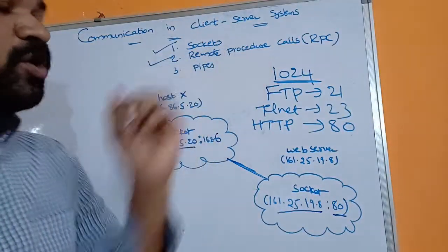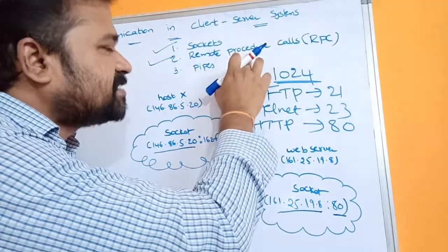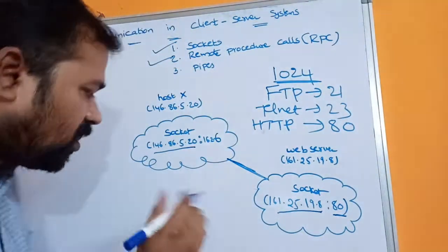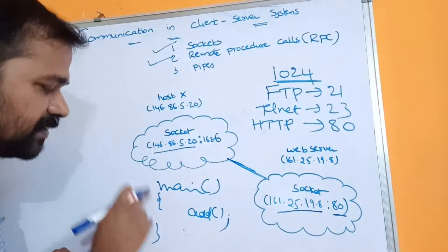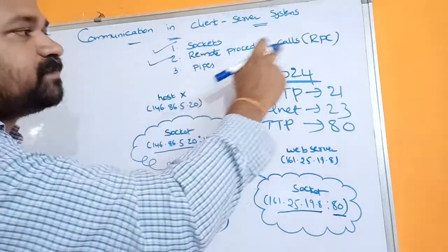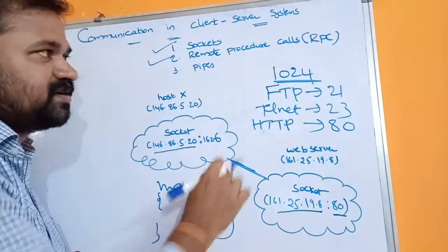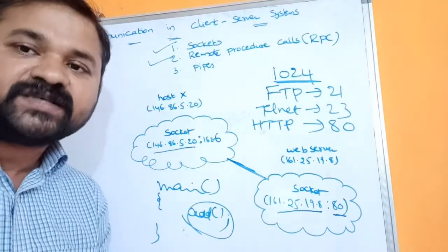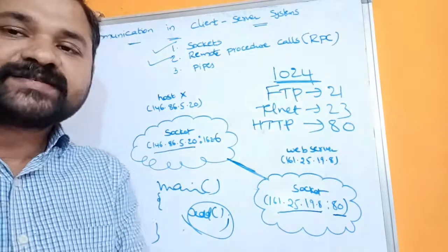The next method is remote procedure call (RPC). The name itself specifies the meaning — remote procedure call means calling a procedure which is located at a remote machine. In every normal program, for example a C program, the main function calls the add function, and both are located in the same program. But with RPC, we call a procedure like add, and that procedure is located in some other remote system. So that is nothing but a remote procedure call.